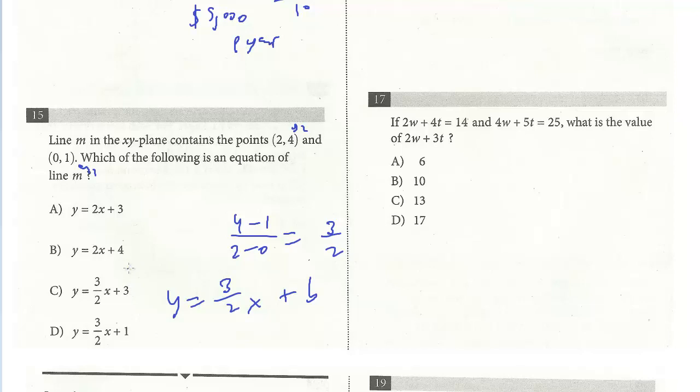The last step is to find b, the y-intercept. If you notice, we have two answer choices with this same slope. We just have to figure out which one of these b's is correct. Anytime you're given a point on a line or a function, it will always satisfy the equation. So just plug in a point and test it. I'm going to plug in (0,1). So I'm plugging in 1 for y. 3 halves times 0 is 0 plus b, b is 1. So really a straightforward question.